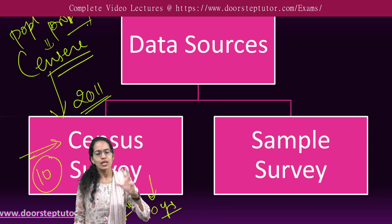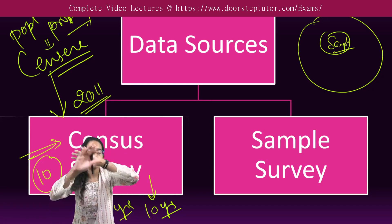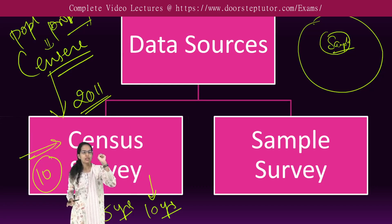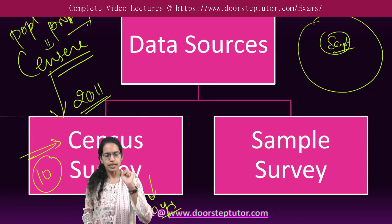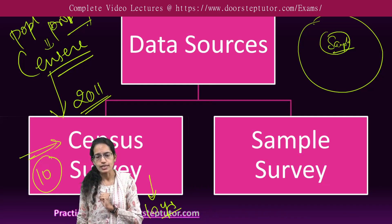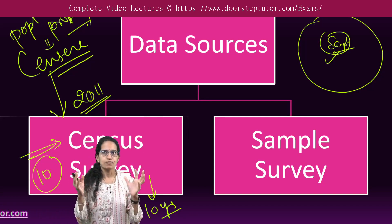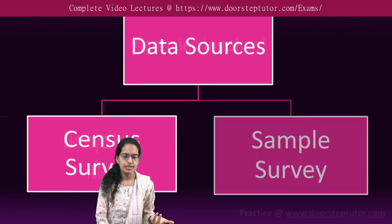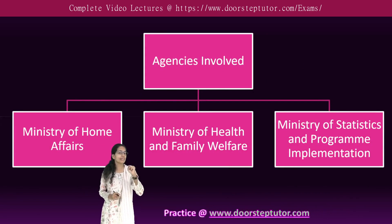In a sample survey, rather than doing a survey on the complete population, we pick a sample and do the analysis on that sample. Sample survey is relatively less exhaustive and less expensive in contrast to a census survey, because you are doing it for a limited set of the population.